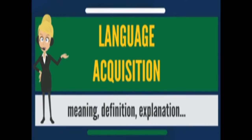Language can be vocalized, as in speech, or manual, as in sign language. The human language capacity is represented in the brain. Even though the human language capacity is finite, one can say and understand an infinite number of sentences, which is based on a syntactic principle called recursion. Evidence suggests that every individual has three recursive mechanisms that allow sentences to go indeterminately: relativization, complementation, and coordination.